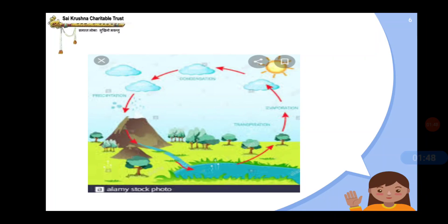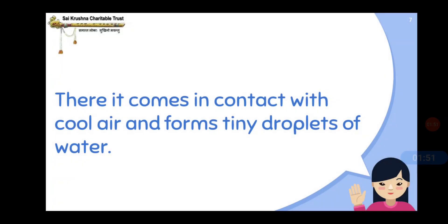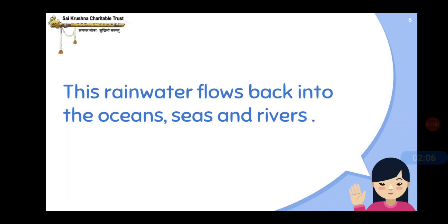There it comes in contact with cool air and forms tiny droplets of water. These tiny droplets of water join together to form clouds. This rainwater flows back into the oceans, seas and rivers. On further cooling, the drops get bigger and fall down on the earth as rain.